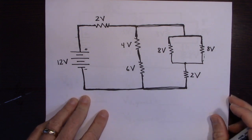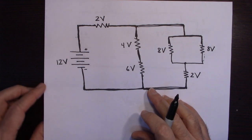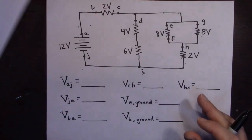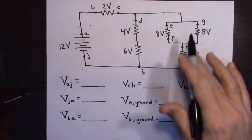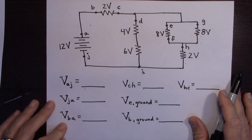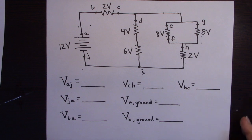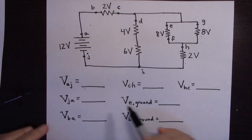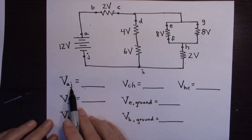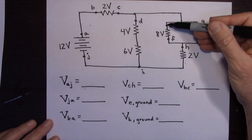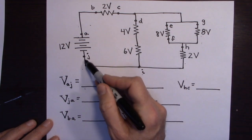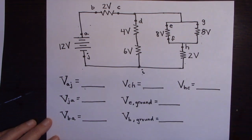Now I'm going to take this same circuit and show how this works when you put a voltmeter on it. This looks more complex but it's really just the same circuit with labeled points. I'm going to find the voltages — the potential differences — around the circuit. When you say the voltage at A with respect to J, that's what it means. The voltage at C with respect to H, the voltage at E with respect to ground — this ground floor is what's called ground in circuits.